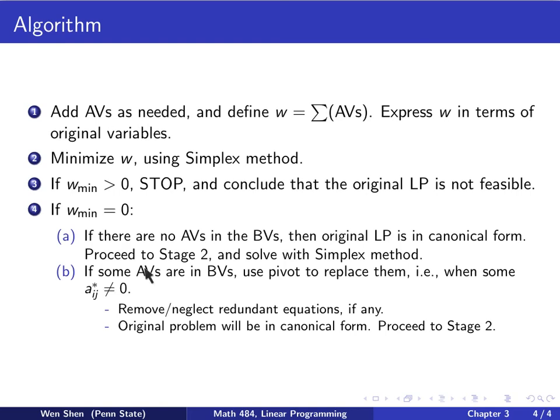Otherwise, if some of the artificial variables are still in the basic variable set, then we will use the pivoting process that we just talked about to replace them. Okay, you can pivot, and whenever you have a coefficient a, that is not 0. And then, a couple of things can happen here. You might discover some redundant equation. If that shall happen, we, in principle, remove it, but in practice, we just neglect that row. And, if the redundancy is not discovered, and then you will manage to put the original problem in the canonical form. Once this is done, and you conclude stage 1, and you proceed to stage 2, and you solve the minimization problem of z using the simplex algorithm.